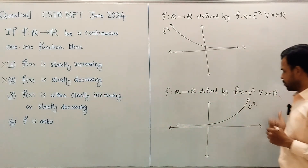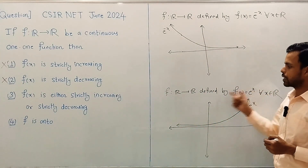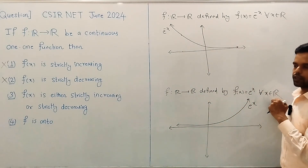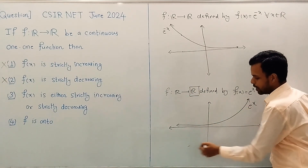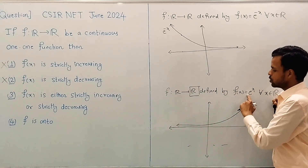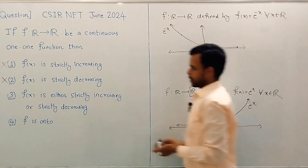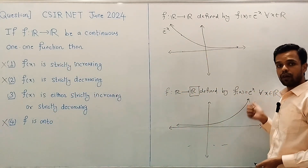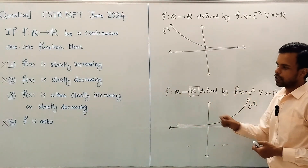Now consider the same example for option 4. f(x) = e^x is a continuous one-one function from R to R, but it is clearly not onto. The codomain is R, but this function does not take any negative values, so the range does not equal the codomain. Therefore option 4 is also discarded.